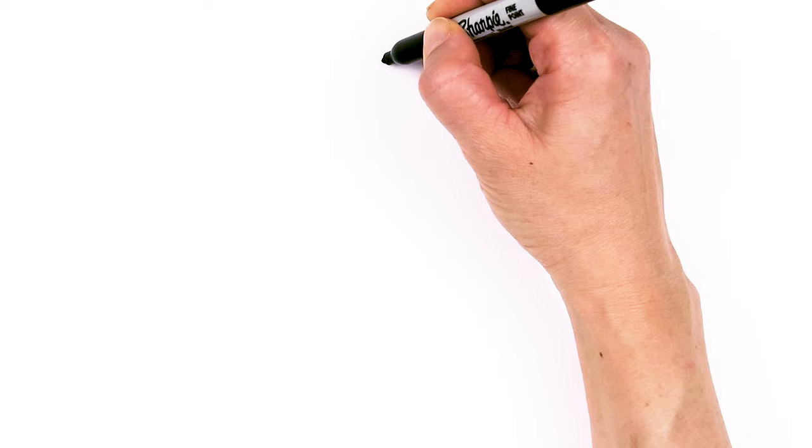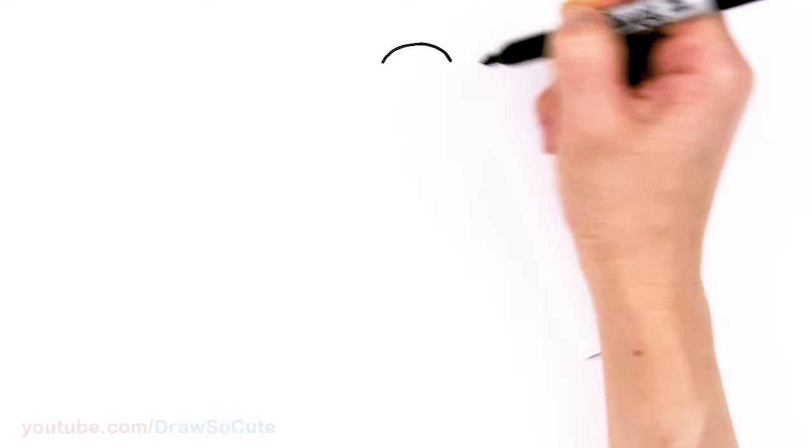To draw this silly hot dog, let's first start by drawing a big curve at the top. So I'm going to come right here, nice and round. So this is going to be the top of our hot dog's head.